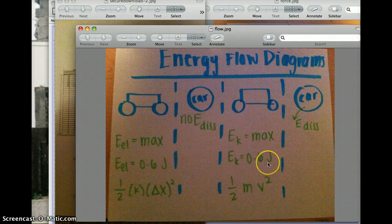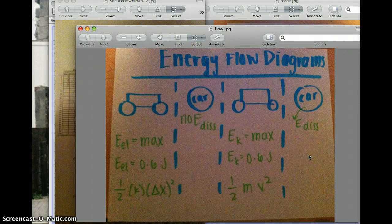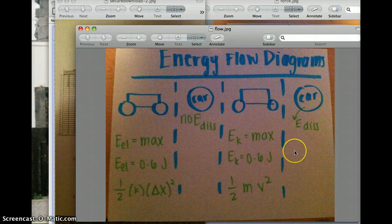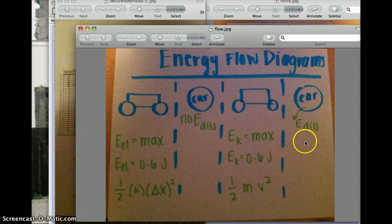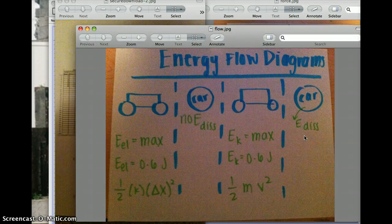But when the car is let go, E kinetic is at its max and it's 0.6 joules again, but the formula is one half mv squared, and there is energy dissipated. By the time the car stops, there's no more energy to be dissipated and so it just stops.